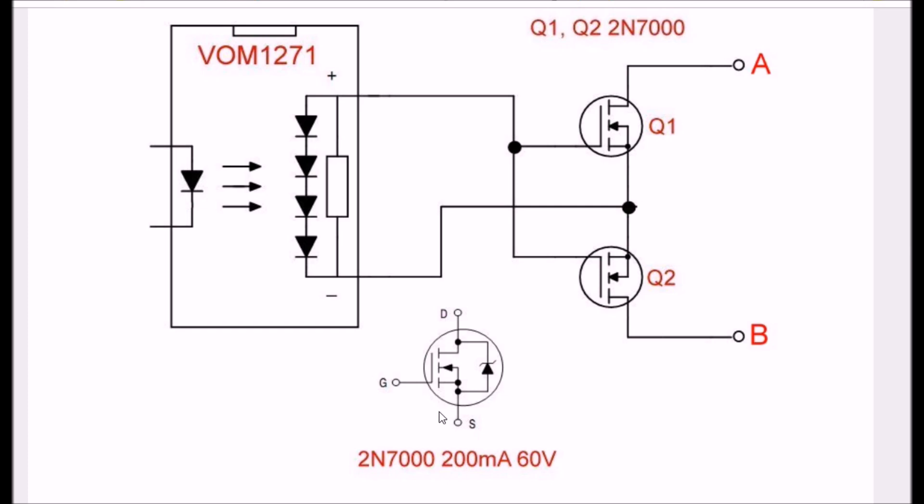Here is the actual outline of the two N7000s that I used. They're 200 milliamps at 60 volts. In another video, I'm going to show you how to really up the power on this. But this works quite well.